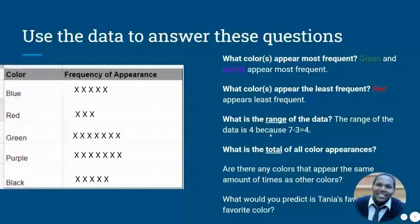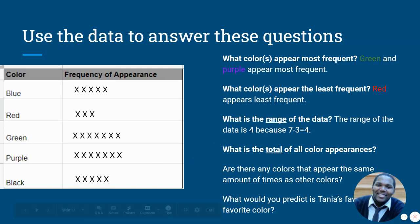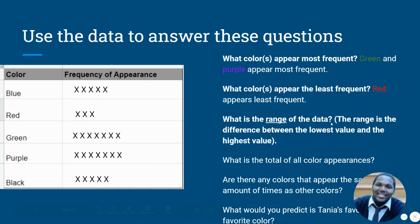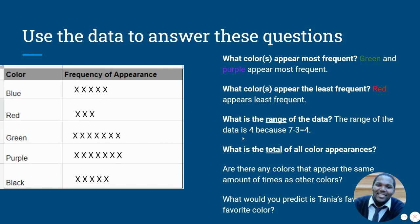Now, what is the range of the data? The range, I think I got a little ahead of myself. The range is the difference between the lowest value and the highest value. So our lowest value is what? Red. And our highest value is what? Seven. So now we're going to say what's seven minus three and seven minus three gives us what? Four. And four represents our range. It's the difference between that most frequent and that least frequent color.